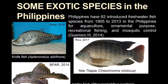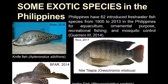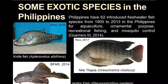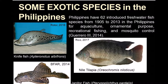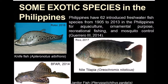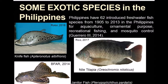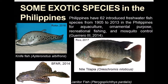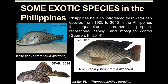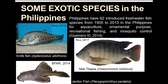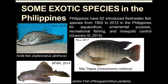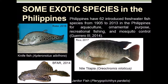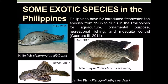Exotic species are not only in terrestrial habitats; we also have lots in our aquatic ecosystems. According to Guerrero 2014, the Philippines has 62 species of introduced freshwater fish from 1905 to 2013. They are introduced intentionally or accidentally for aquaculture, ornamental purposes, recreational fishing, and mosquito control.